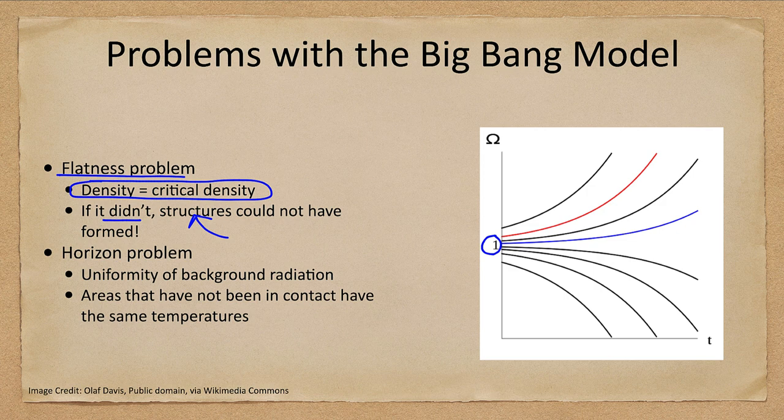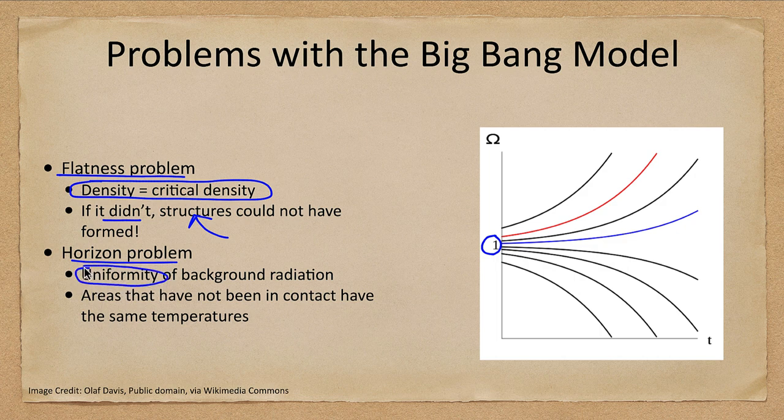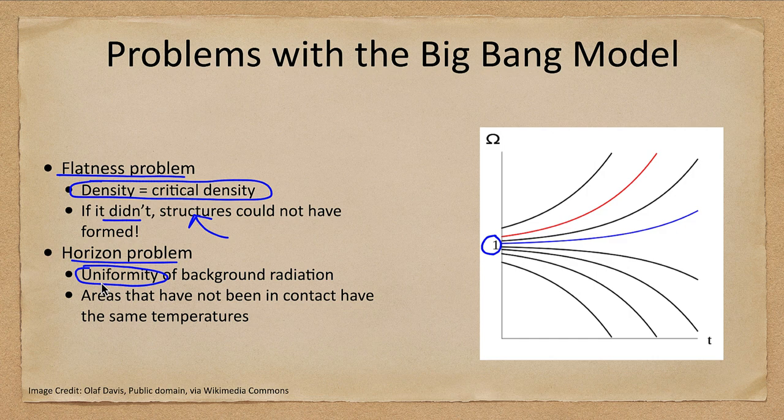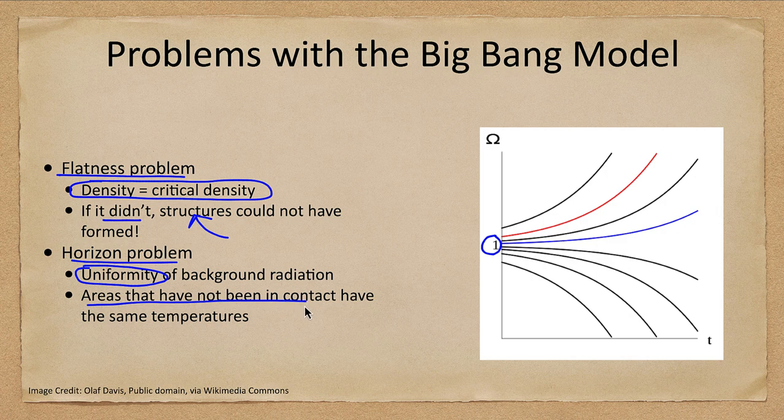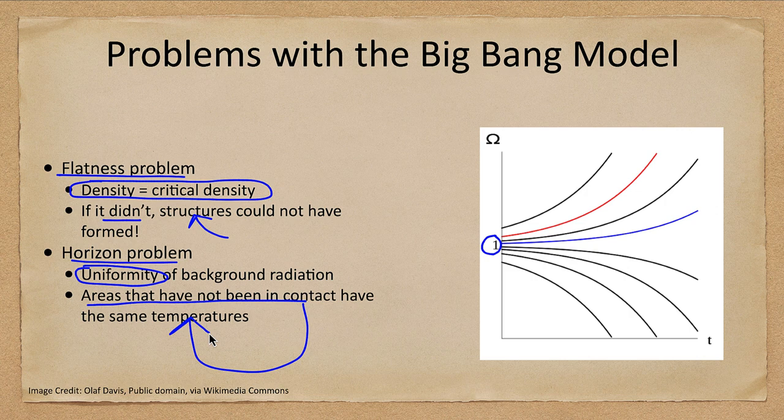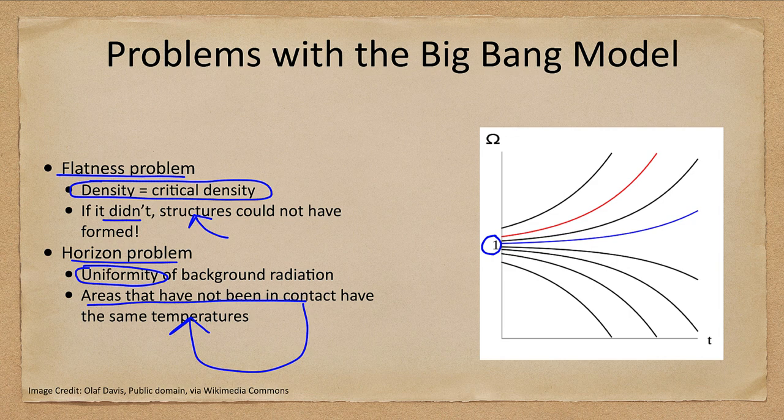The horizon problem is in the uniformity of the background radiation. Why is it so uniform no matter where you look in the universe? That is a difficulty because you have areas that have never been in contact, but they have the same temperatures. So it would take time. There's no reason that they would know what the other temperatures were because they are so far apart. But we have to look at some way that they may have been able to be in contact in the past.